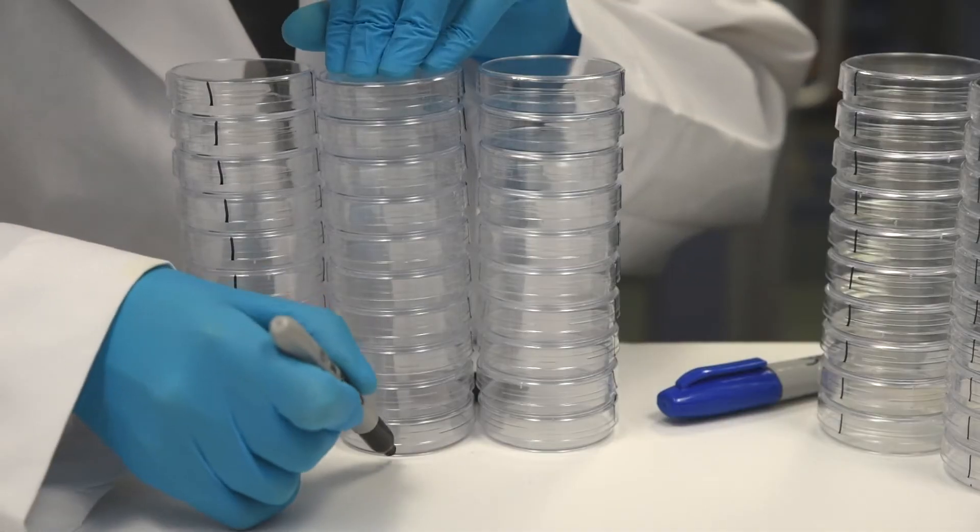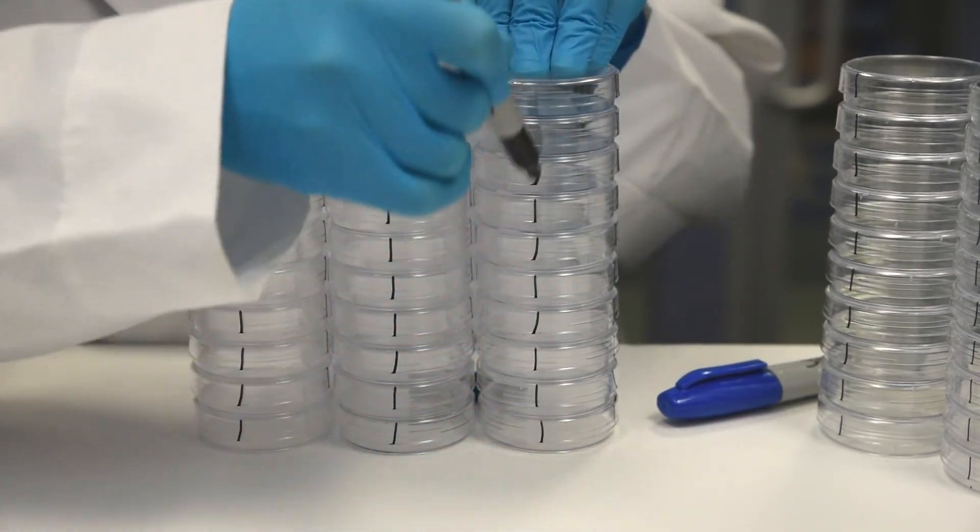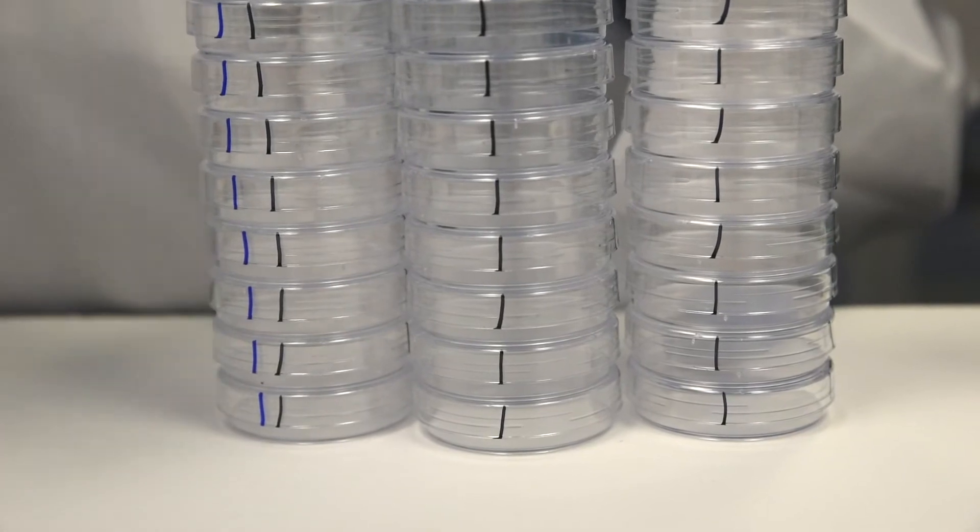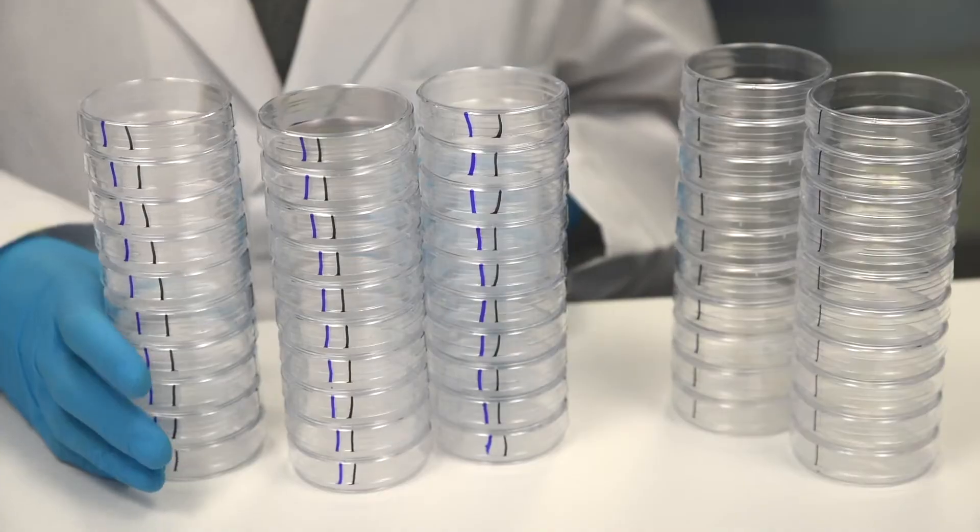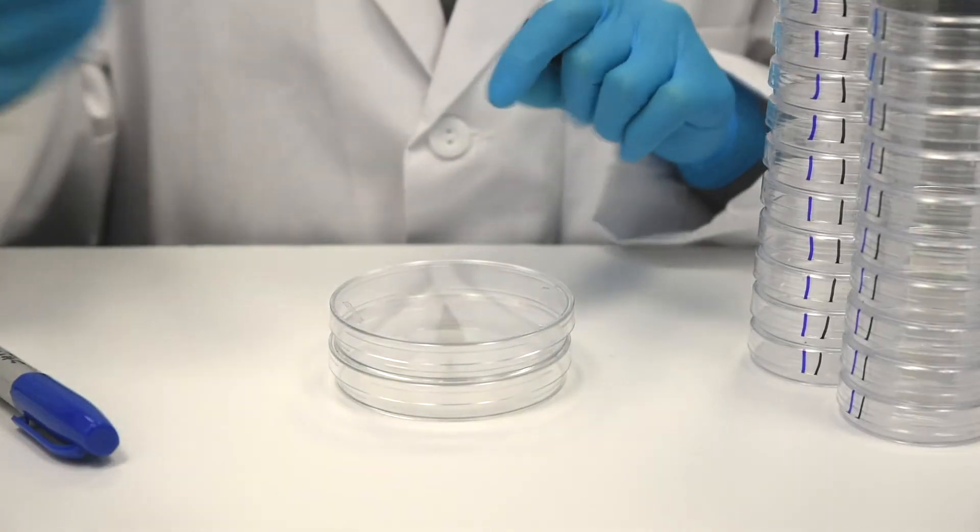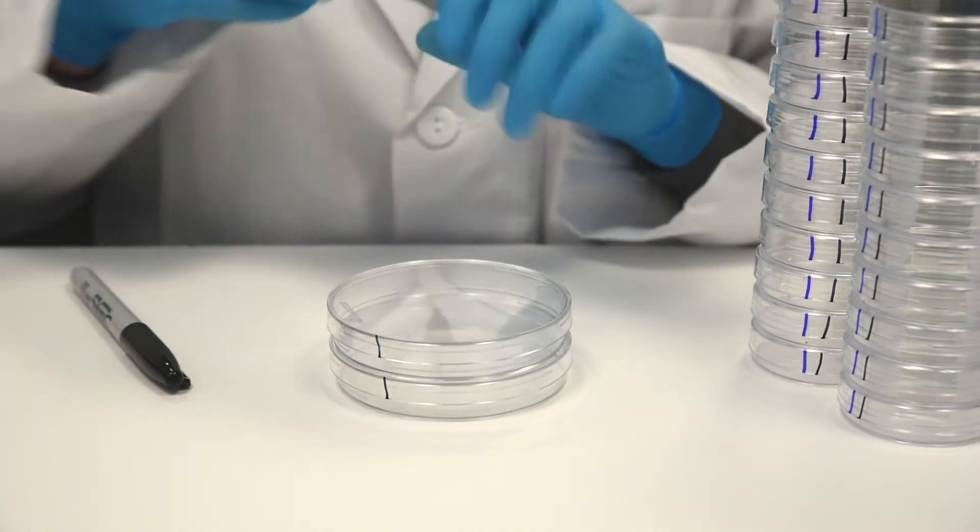Next, stack 30 small plates and stripe them with two lines. These 30 plates will be the LB amp IPTG plates. Finally, stack two large plates, stripe them with two lines, and label as control.